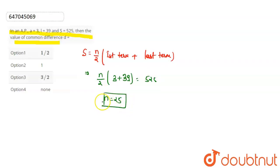Number of terms is 25. Now, we need the last term value. That is 39 which is equal to first term plus n minus 1. The last term formula is n minus 1 into common difference D.